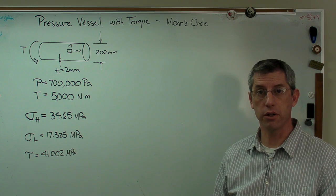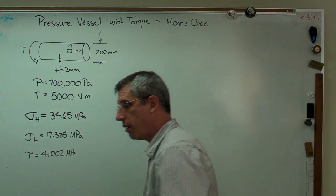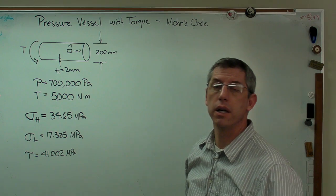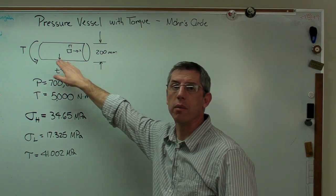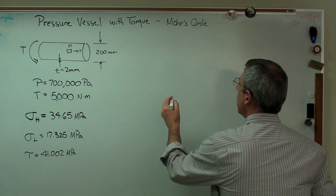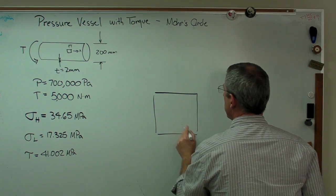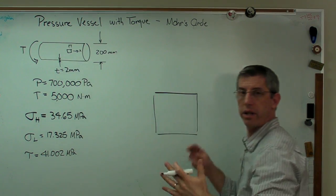Now we're going to start by drawing a stress element. The stress element is right there on the pressure vessel. Now it could be anywhere, but I drew it right there for clarity. And here's what it's going to look like. There's the stress element. This is just this expanded out.